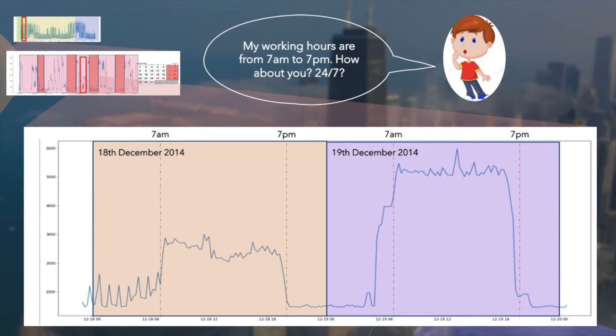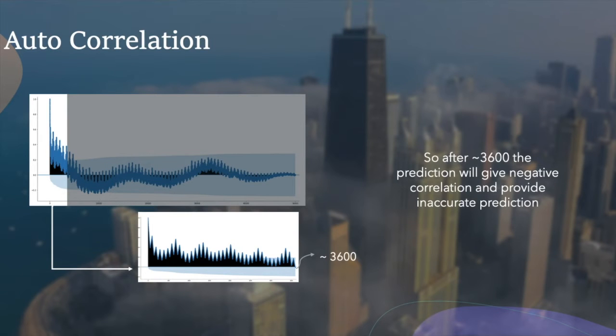Next is the autocorrelation. We can see that the dataset is positively correlated up until the data point 3600, where it starts to show negative correlation. Hence, the data will only give more correlation before 3600 data points.